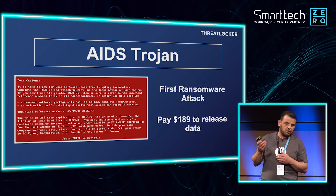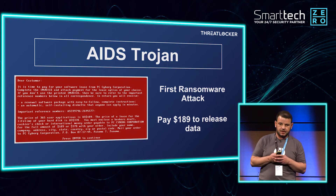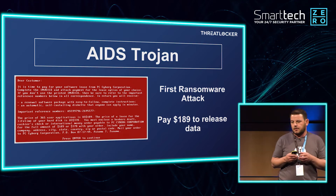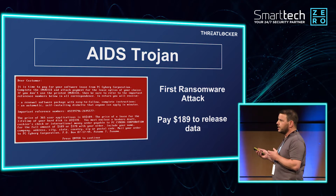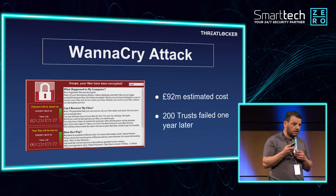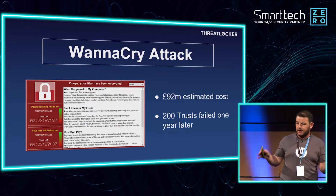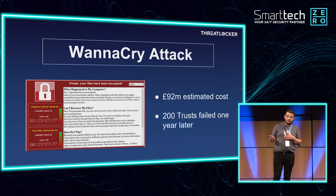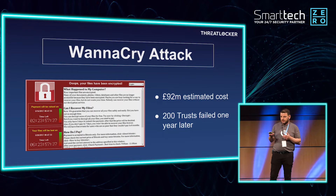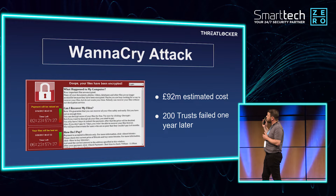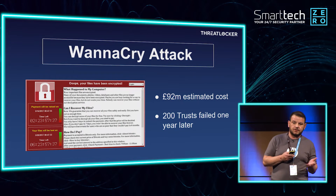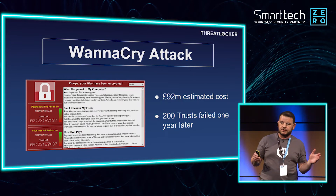Then it started to evolve. Traditionally, ransomware would infect your machine and just your machine — kept unique to that endpoint. But in 2017, we saw a new type of ransomware: WannaCry. WannaCry had the ability to spread across networks, infecting and encrypting each and every machine within that environment. It propagated through networks using EternalBlue, and is reckoned to have been developed in North Korea. The damage was completely different to what we had before, because of its ability to spread.